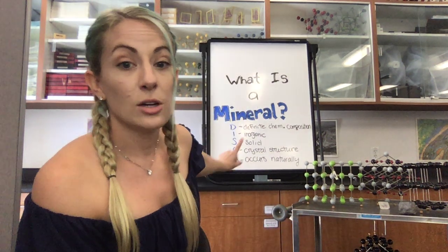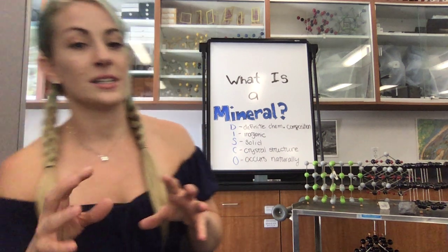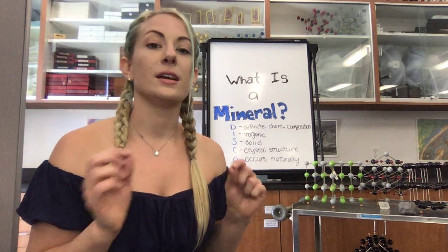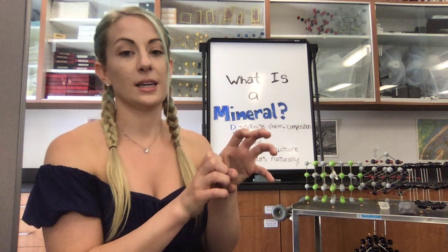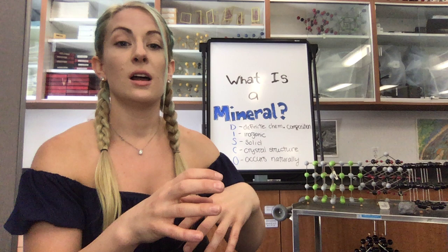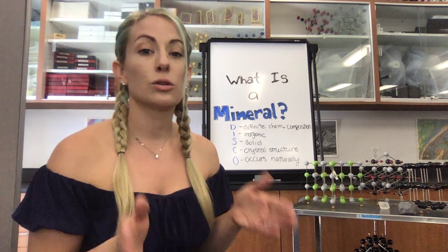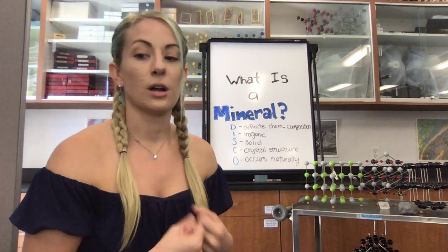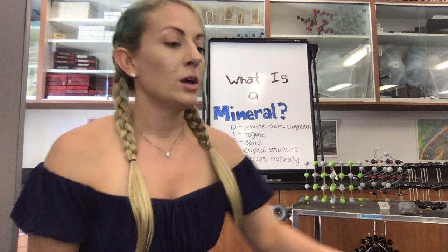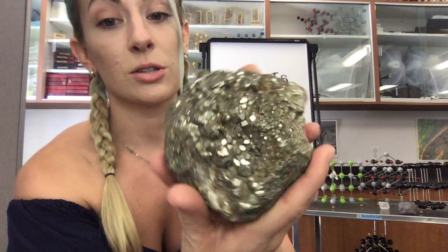Now we're going on to C — crystal structure. All of these solids that are minerals have a definite chemical composition, and because chemicals bond together in predictable patterns based off of their electron affinities, you get definite known crystal structures in every mineral. Every single mineral has its own unique crystal structure. You can't always see the crystal structure with your naked eye, but if you look at this pyrite, you can see those crystals.